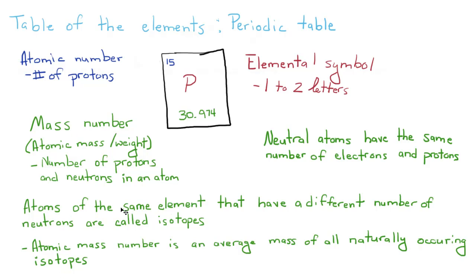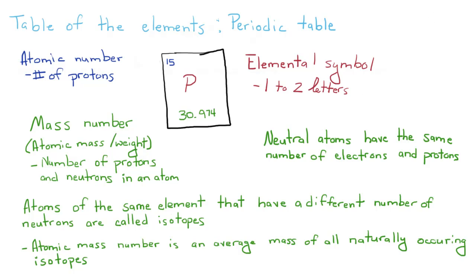The atomic mass number is an average mass of all naturally occurring isotopes. Isotopes are atoms of the same element that have a different number of neutrons. And here is an example of an isotope. What I've written here is called chemical shorthand. The top number is going to be your atomic weight. The bottom number is going to be your atomic number. Most people are going to leave the atomic number off.